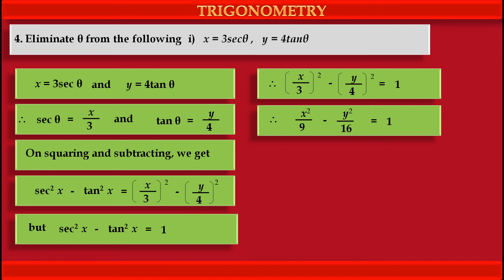This is the equation where we have eliminated theta. The equation is x squared upon 9 minus y squared upon 16 is equal to 1.